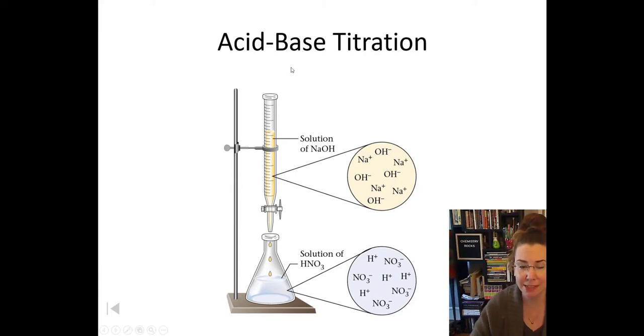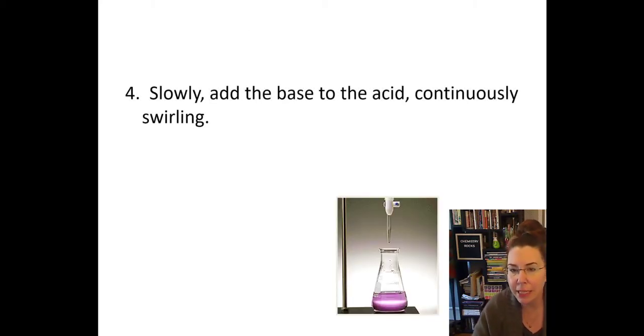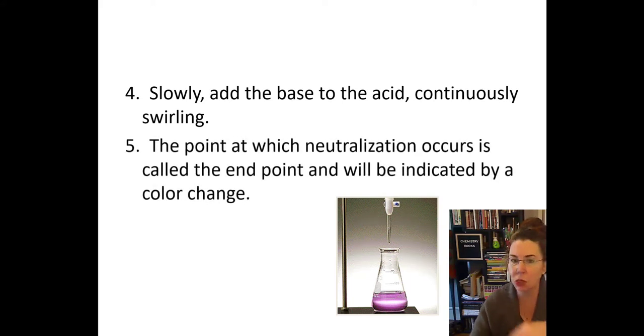Alright. So here's an example of an acid-base titration. We have sodium hydroxide in our burette. And in this titration, we have a solution of nitric acid in our flask. And we have that phenolphthalein in it. We add our base one drop at a time, watching for the point where the color starts to change and then stays that new color, but without overshooting it. And we'll talk about overshooting in just a second. So we're going to slowly add our base to our acid, continuously swirling as we go. And the point at which our neutralization occurs is called the endpoint. And this is indicated by our color change. It's going to change from colorless to pale pink.